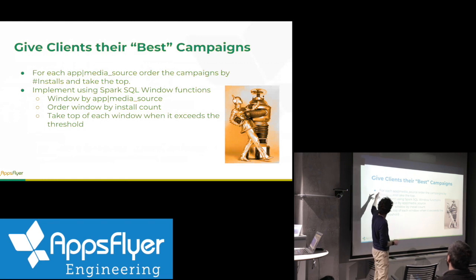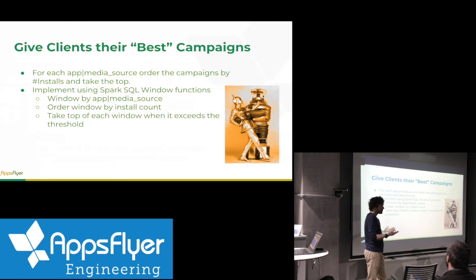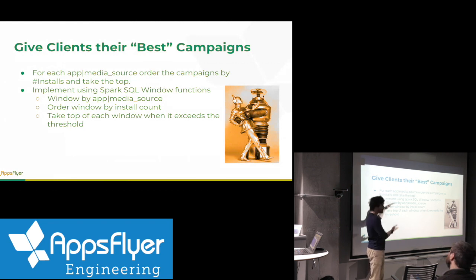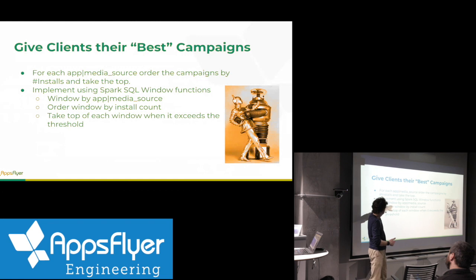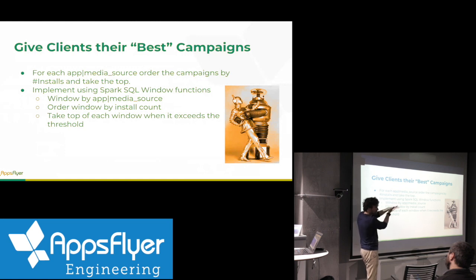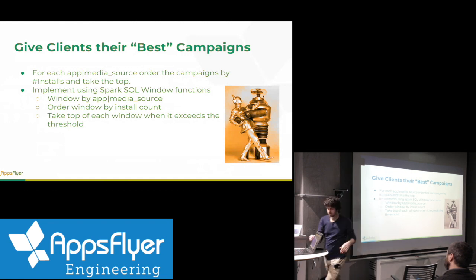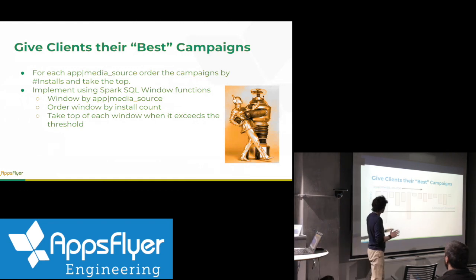The way we implement this is using Spark SQL windowing functions — these are pretty typical features of most relational databases now. The idea is you can imagine your data as a big long spreadsheet table, and then you cut it up into windows where each window has all the data for one app media source pair inside it. Then within that window, the database sorts it so that the best campaigns are on the top. Every bar here represents one app media source pair, and we run all their campaigns down this way. If they have less than 3,000 — or whatever the cutoff is — no problem. If they have more than the cutoff, they lose the bottom campaigns and keep the top ones.